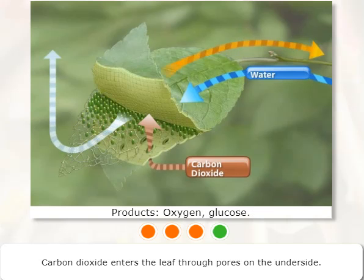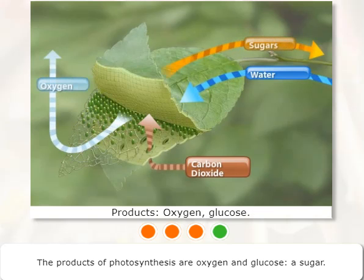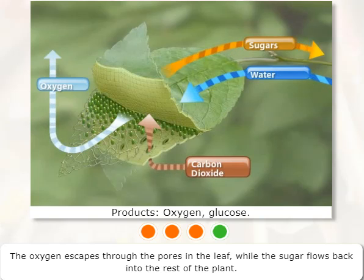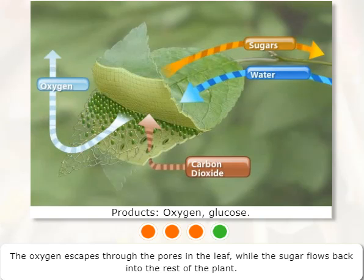The products of photosynthesis are oxygen and glucose, a sugar. The oxygen escapes through the pores in the leaf while the sugar flows back into the rest of the plant.